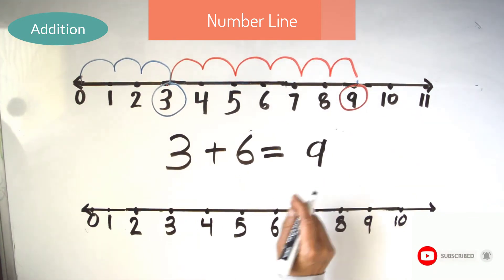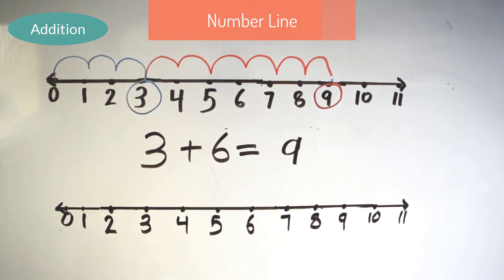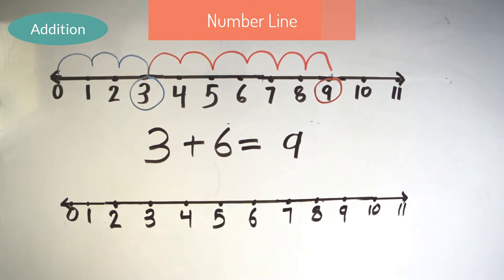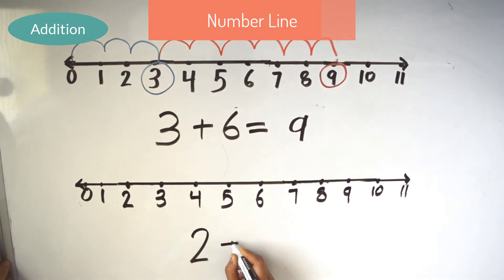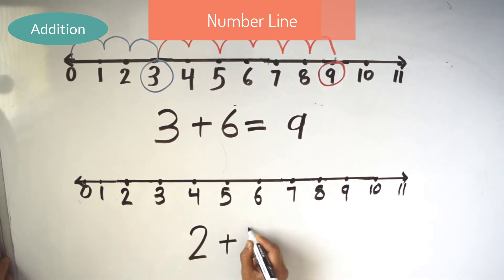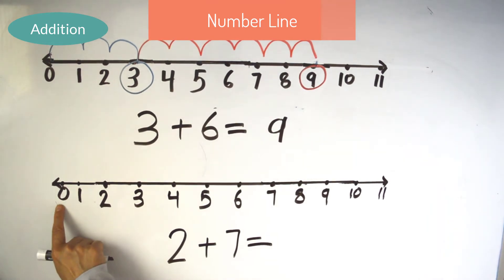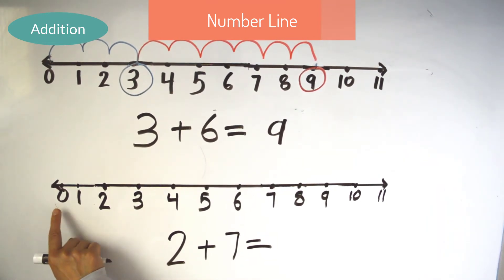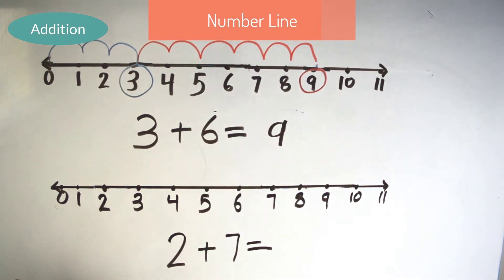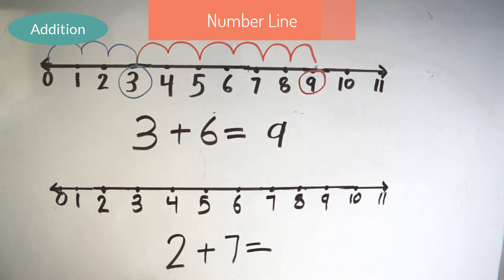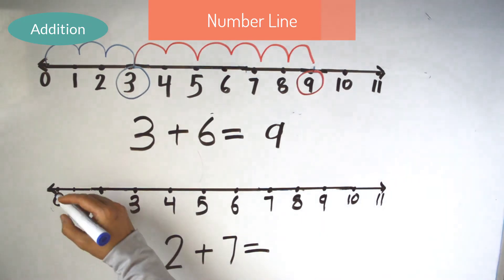Let's do one more example. Let's add 2 plus 7 on our number line. Like I said, always start from 0 when you add on a number line. Let's jump 2 times because our first digit is 2.